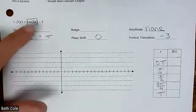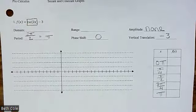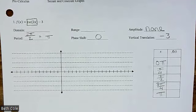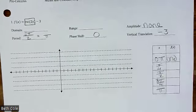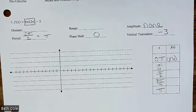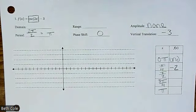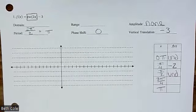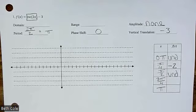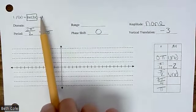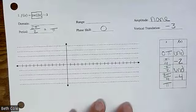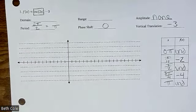Whatever you get, subtract three. Undefined minus three is just undefined. An asymptote is an asymptote. So let's go around our circle. What's your first y value? Zero — when you flip that, you get undefined. Now at the top, y value is one. Flip that, it's one minus three: negative two. At the bottom, y value is negative one. Flip negative one — it's still negative one minus three: negative four. And then the last one is undefined. The process is the same — you're just flipping the y values.